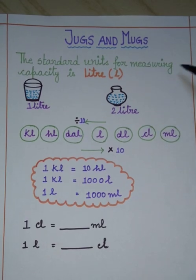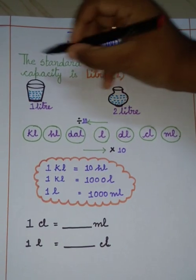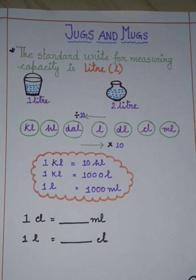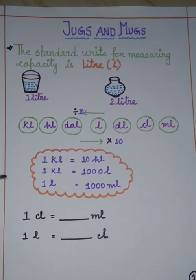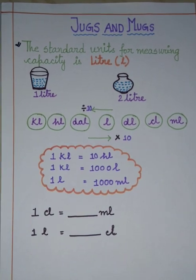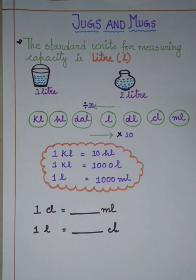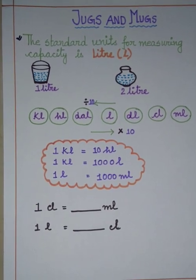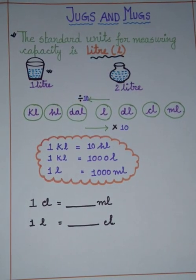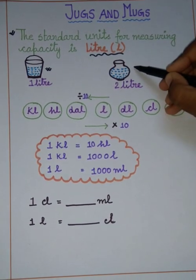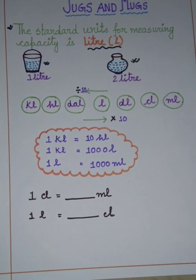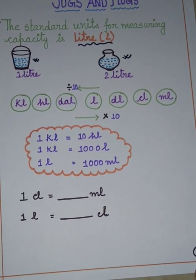The standard unit for measuring capacity is liter. This is the most important thing of this chapter — whenever we are going to measure any capacity of a liquid, it will be in liter. Just like when we measure the length of any item we use meter, here when we measure the capacity of a liquid, we use liter. Suppose there is a bucket full of water — we can say it is one liter — and a pot full of water has a capacity of two liters.